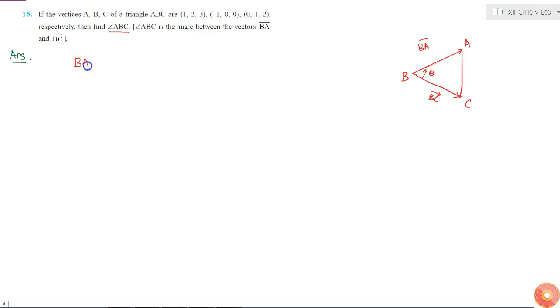If we take the dot product of these two vectors, then BA dot BC equals magnitude of BA times magnitude of BC times cos theta. So if I can find these four values, I know cos theta.